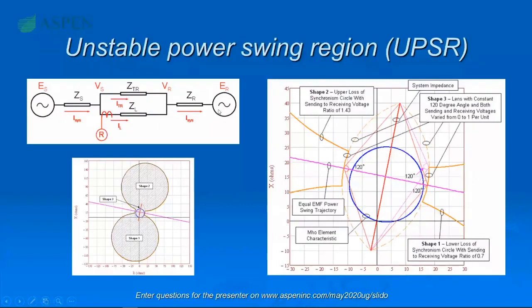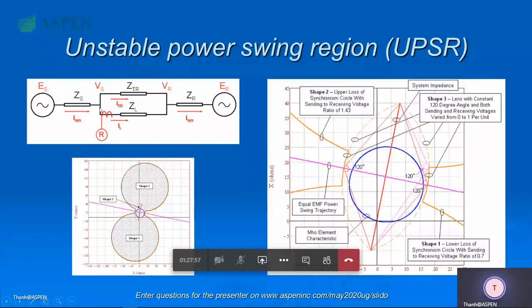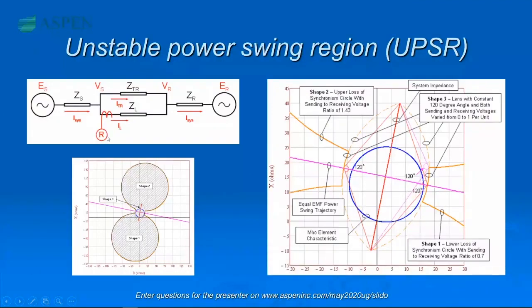Aspen one-liner is well equipped for you to make this calculation and do this plot. What we have in Aspen one-liner is not the simplified system, but a full model with thousands of buses, lines, and relays. The program can reduce that entire system to just a transmission line with two sources and a transfer impedance. If you have the line and relay already in the model, one-liner will help you show this graph and make the corresponding calculation.